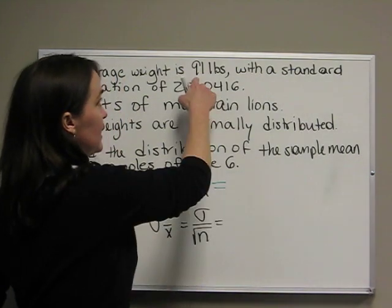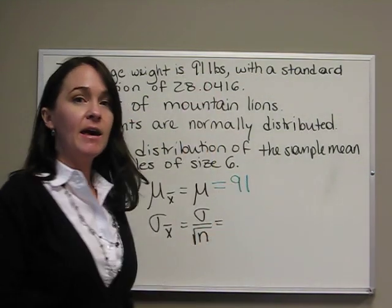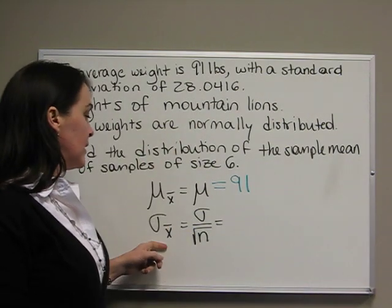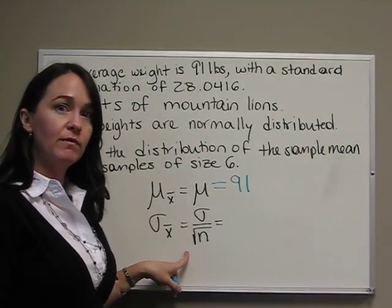The population mean is 91, based on our information. Sigma of x bar is sigma over the square root of n.